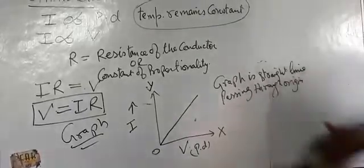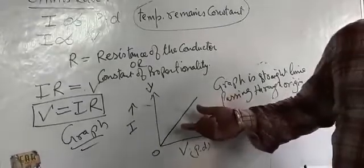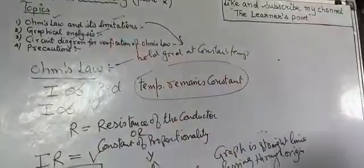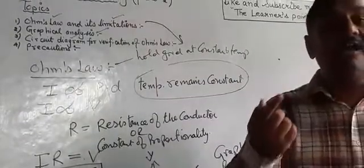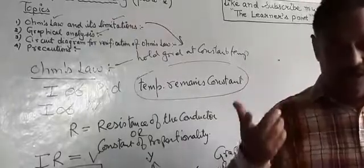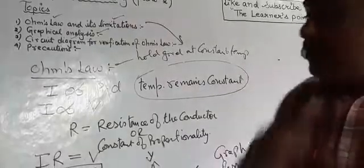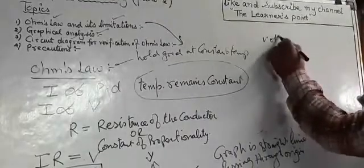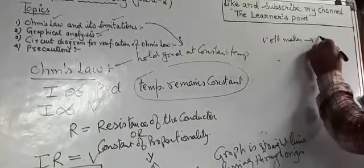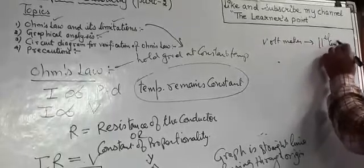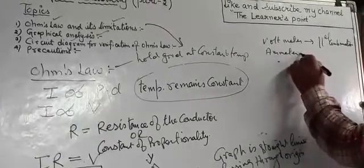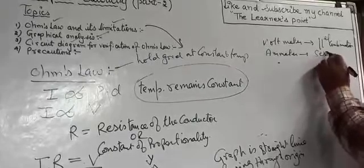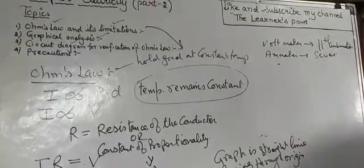Now we are going to look at the circuit diagram for Ohm's Law. For this experiment we need one battery, a rheostat, a key, a resistance, a voltmeter, and an ammeter. The voltmeter is connected in a parallel combination, and the ammeter is connected in series.